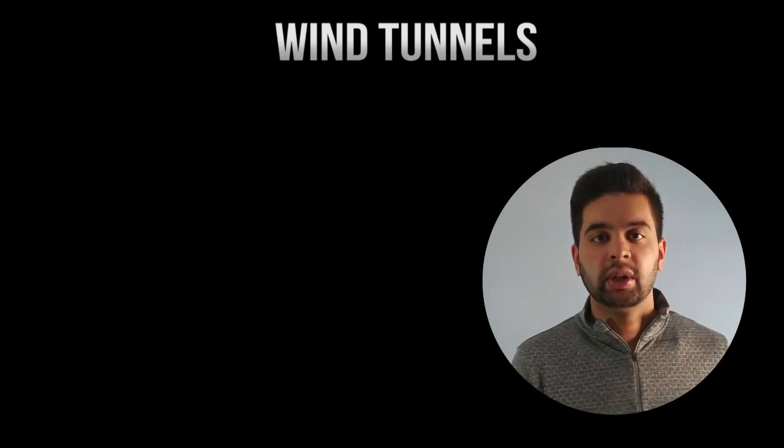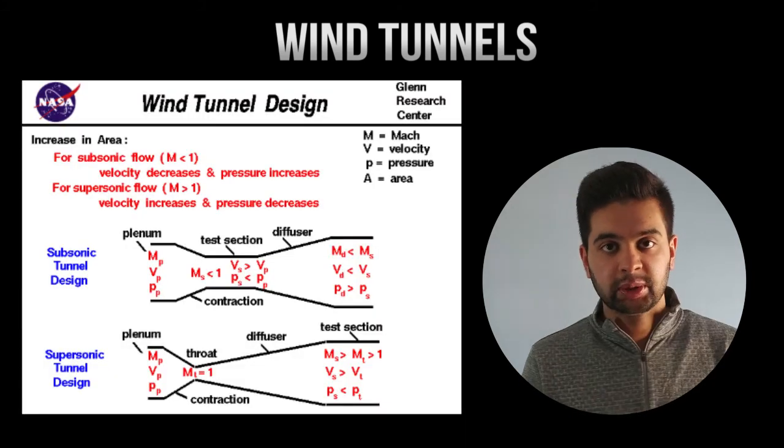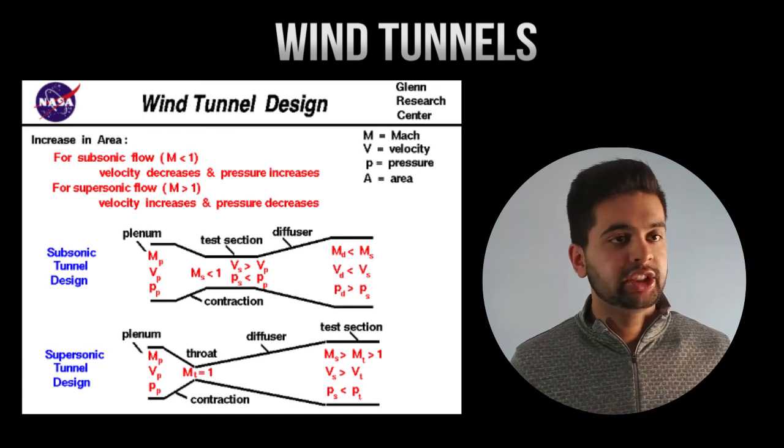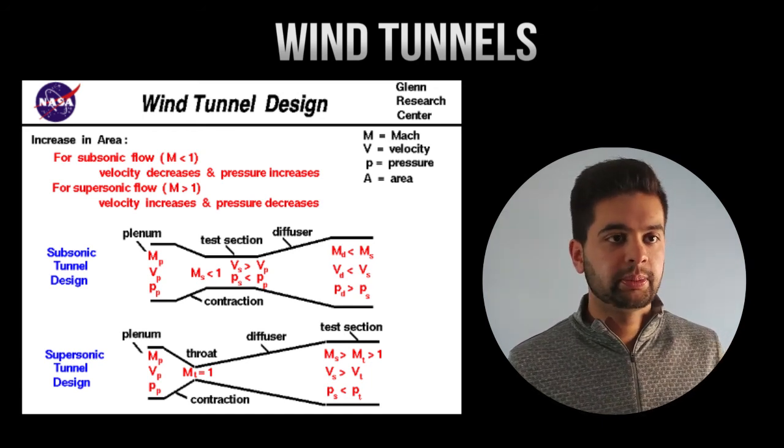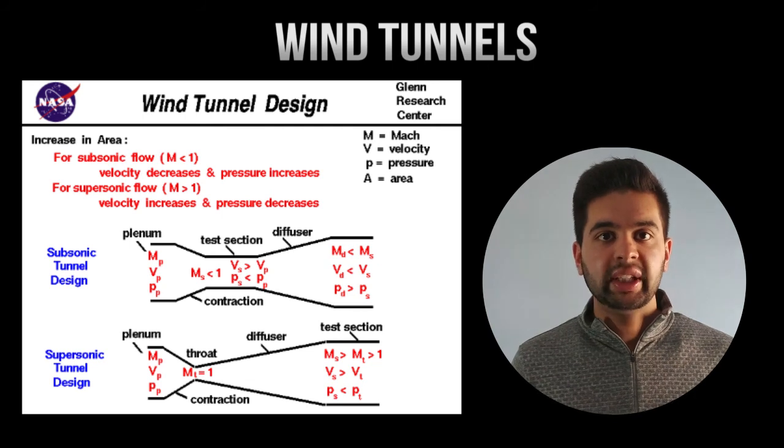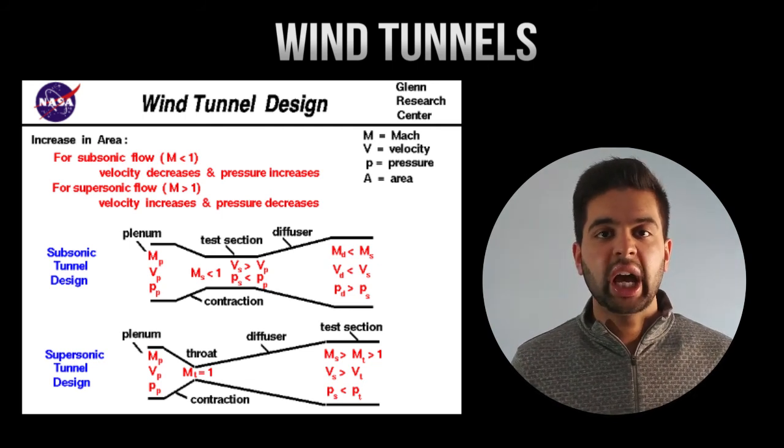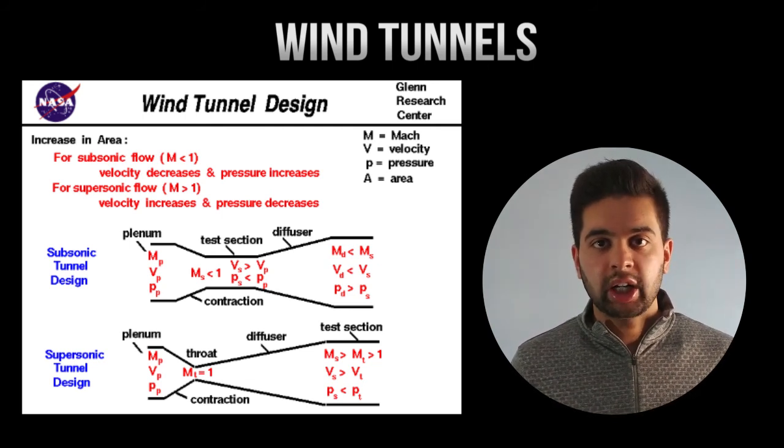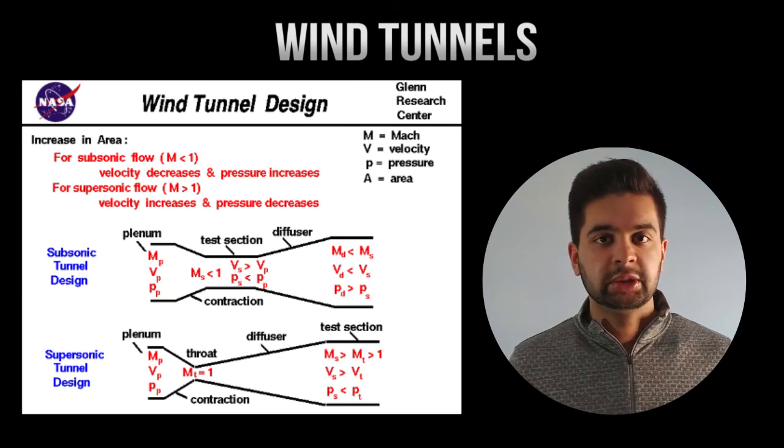Wind tunnels can be broken down into two parts: subsonic and supersonic. In a subsonic wind tunnel you simply have a fan which spins and pushes air down your chamber. But in a supersonic wind tunnel you need to have speeds faster than Mach 1, and Mach number is the speed of sound.